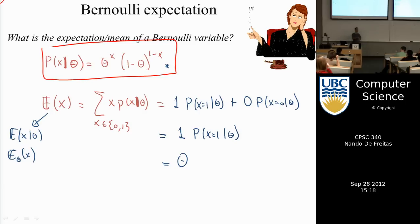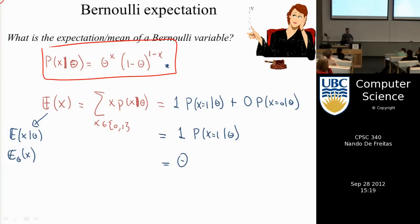With probability theta, it's a 1; with probability 1 minus theta, it's a 0. So with probability theta, x equals 1, and with probability 1 minus theta, x equals 0. The expectation is the mean of the distribution, and we show that it's equal to theta.